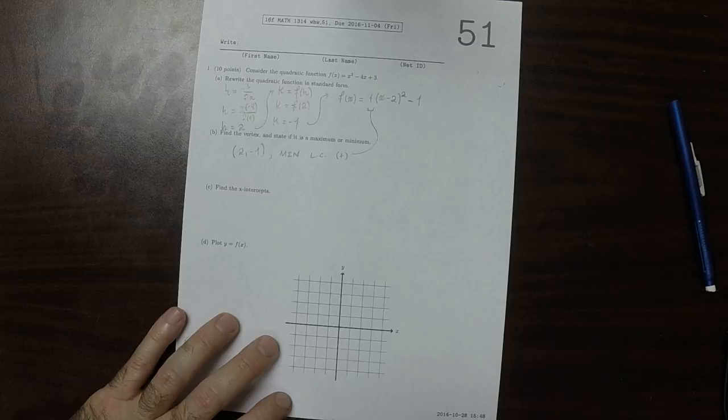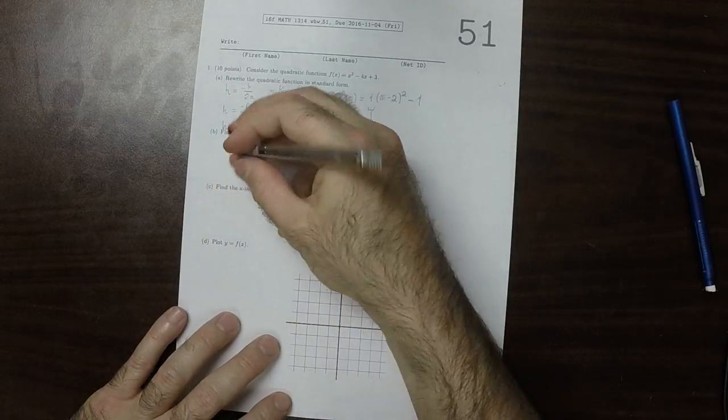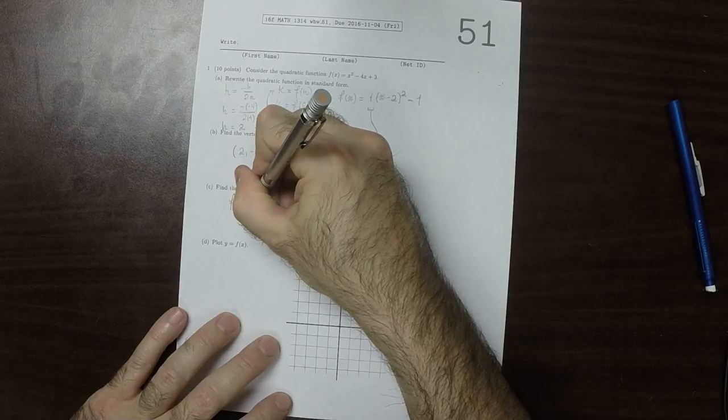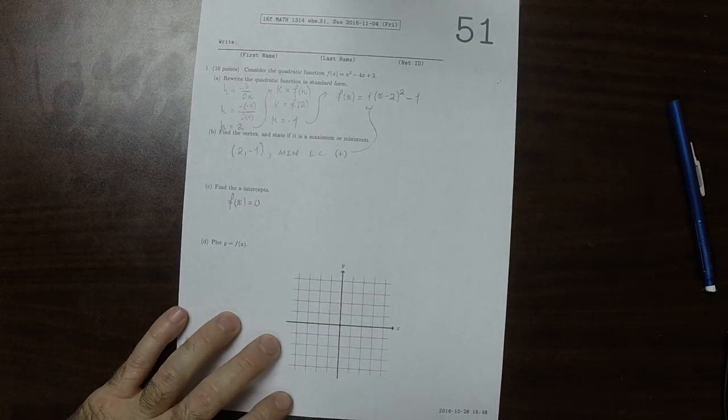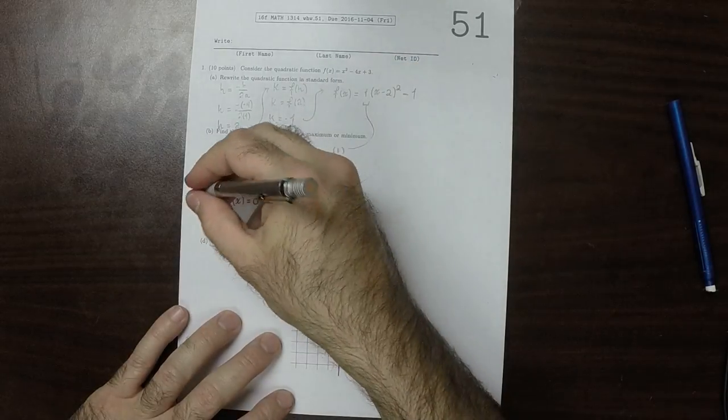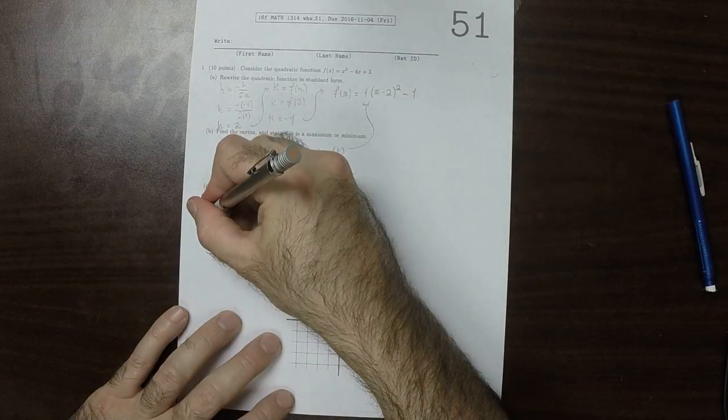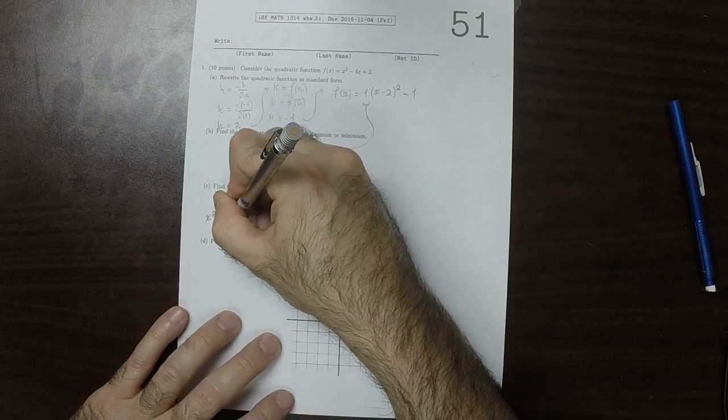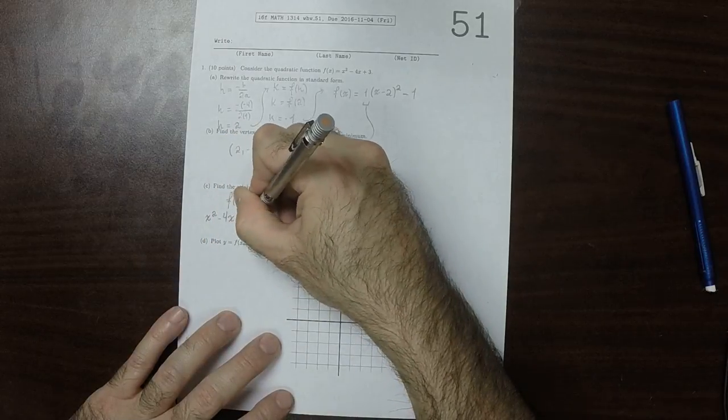Find the x-intercepts. That is to say, we want to solve f of x equals 0. Going to the original equation, that means we want to solve x squared minus 4x plus 3 equals 0.